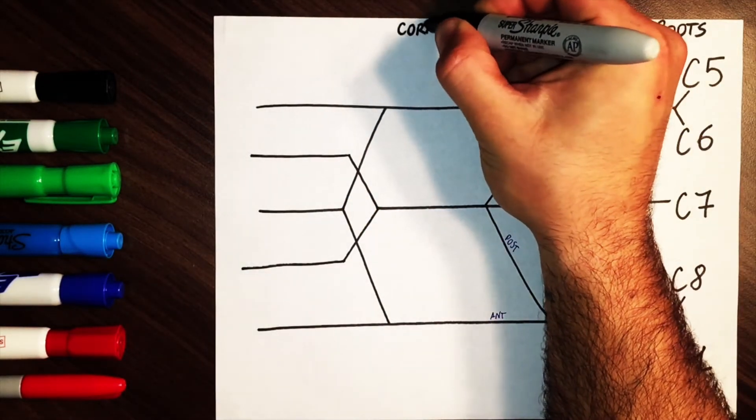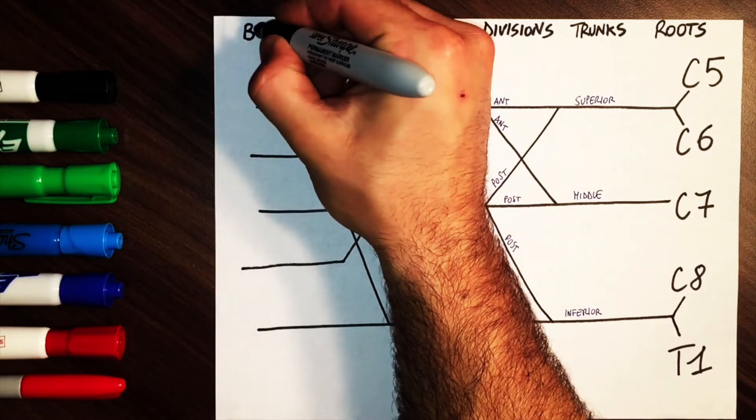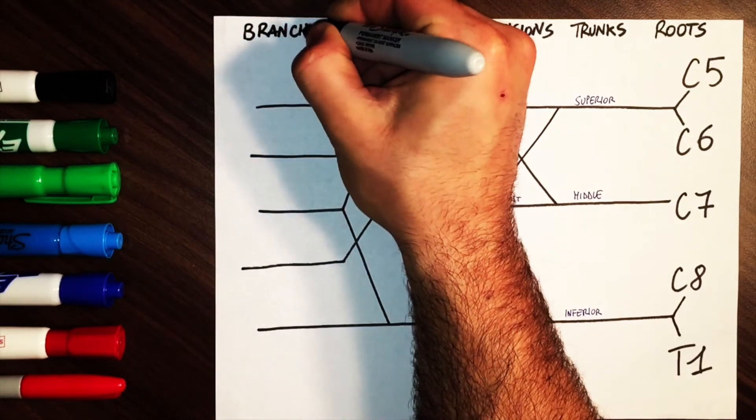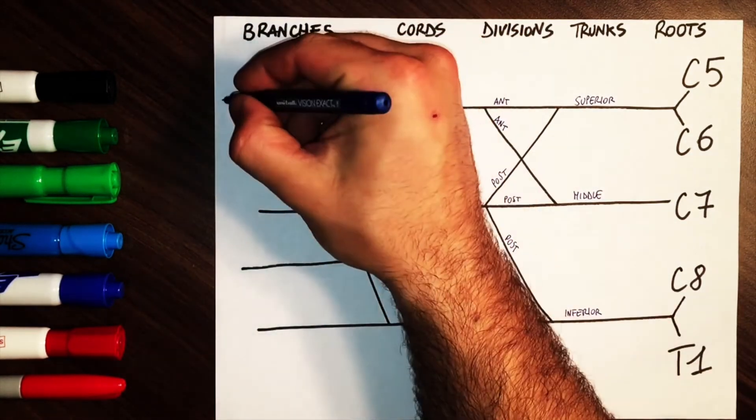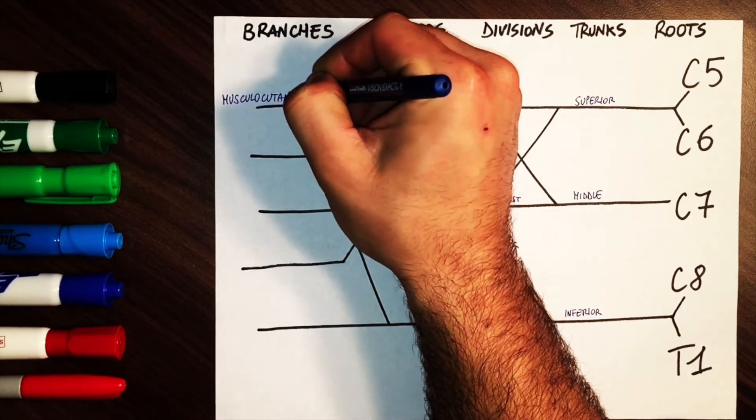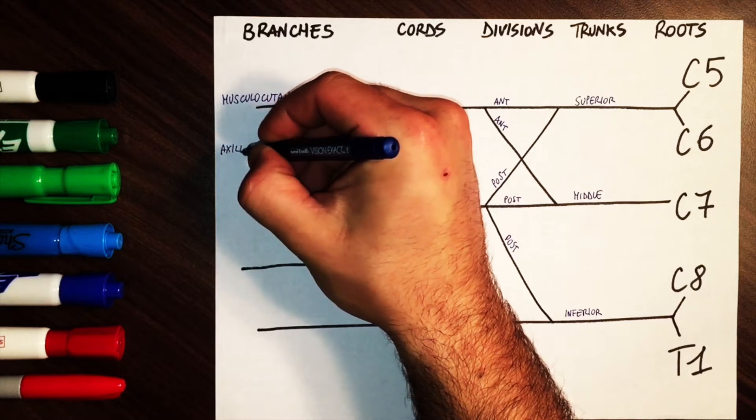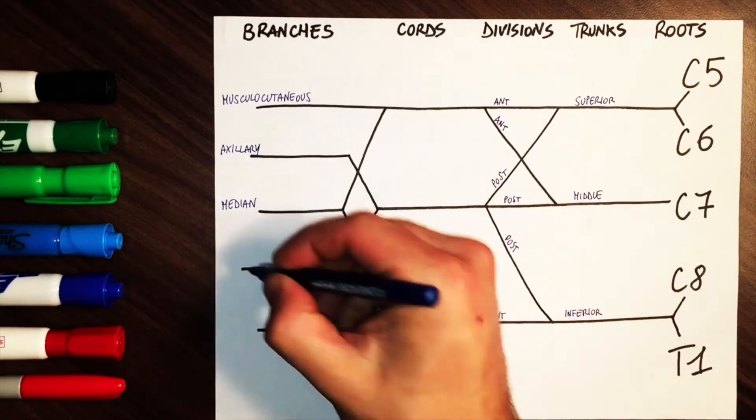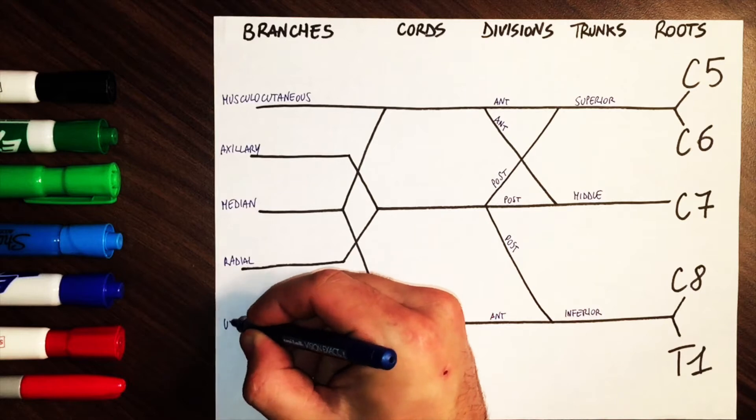After labeling the two final segments, let's name the five main branches. From C5, C6, and C7, we have the musculocutaneous nerve. The axillary nerve comes from the fork. The median nerve from C5 to T1. The radial nerve, again from the fork. And the ulnar nerve from C8 and T1.